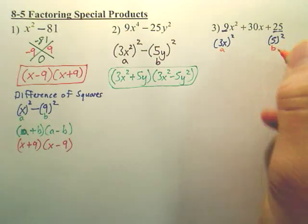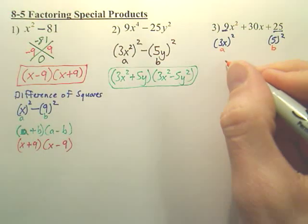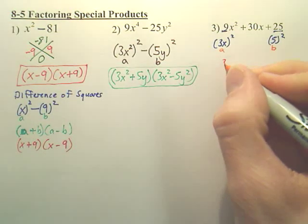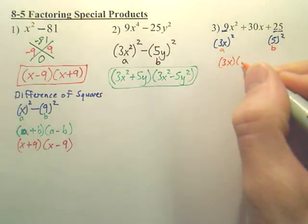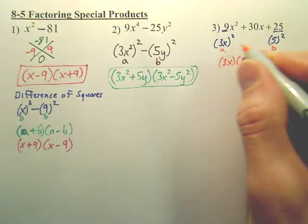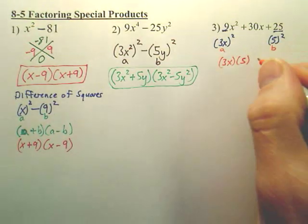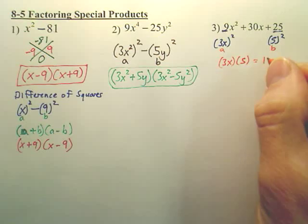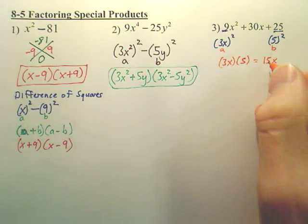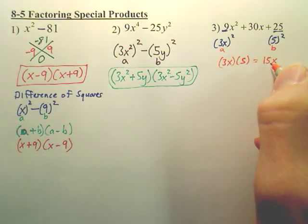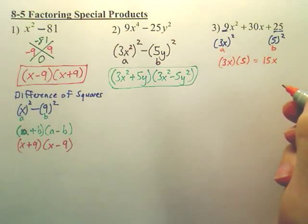If you multiply those two, if you take 3x times 5, you multiply these two. What you get here is 15x. If this is half of that, then there's a shortcut.